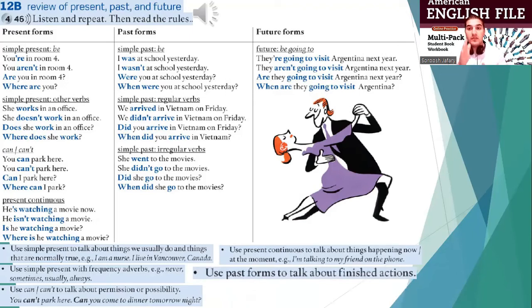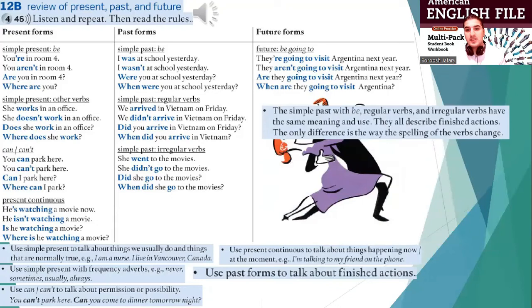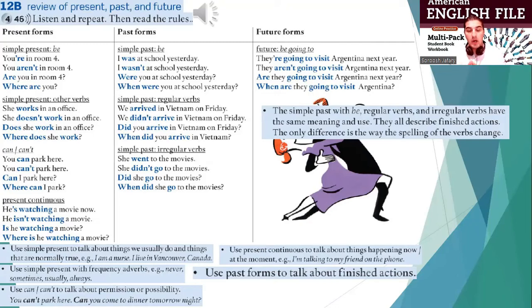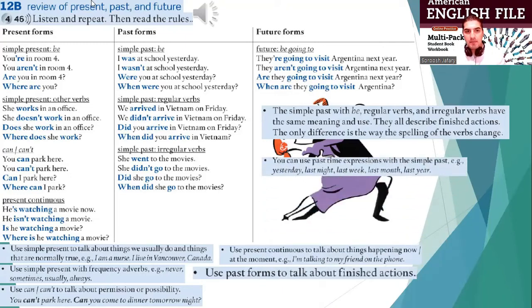Choose past form to talk about finished actions. For example, I went to school, I went to the gym, I bought a book. Simple past with be, regular verbs and irregular verbs have the same meaning and use — they all describe finished actions. The only difference is the spelling of the verbs. If it's regular, add ED: I talked to my friend, I walked home. But irregular: I went home, I bought a book. You can also use past-time expressions with the simple past.